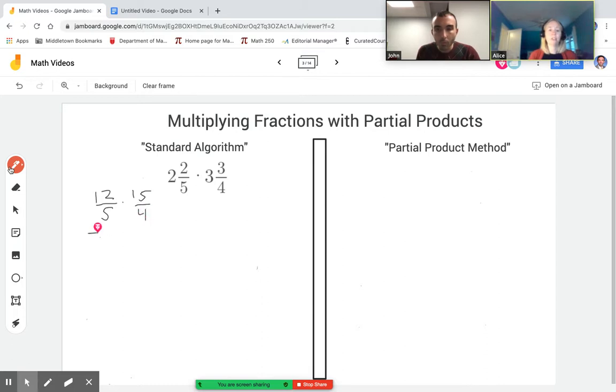Now I would multiply straight across the top and straight across the bottom. So that would be 12 times 15 on the top and I'm gonna do that out longhand. And then 5 times 4 is 20. So I'm gonna do out 12 times 15 over here. 5 times 2 is 10. 5 times 1 is 5 plus 1 is 6.